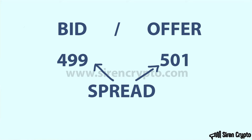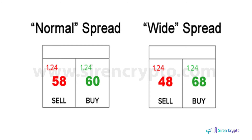Clearly if we're buying at 501 and we decide to sell straight away we're going to have a loss. The market needs to move two points in this example for us to have a break even trade. If we were trading something that had a 50 point spread, then it has to move 50 points in our favour to break even. But I think this makes much more sense when we look at it in a real market.